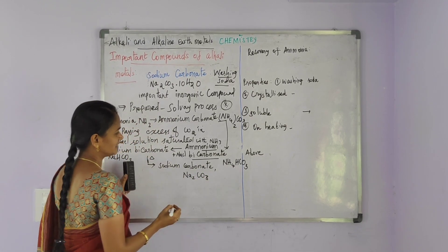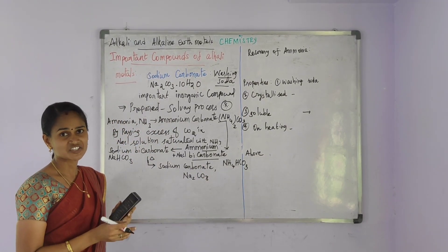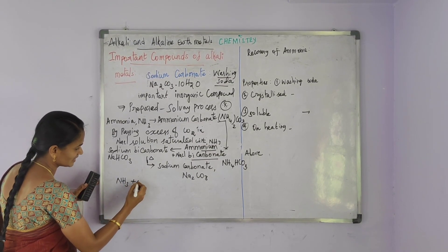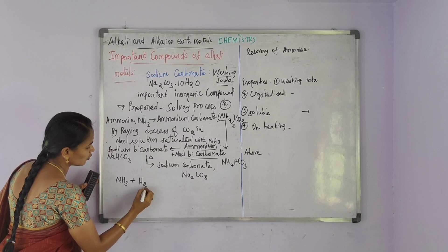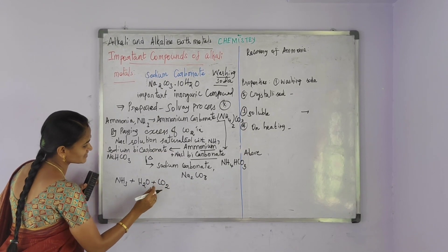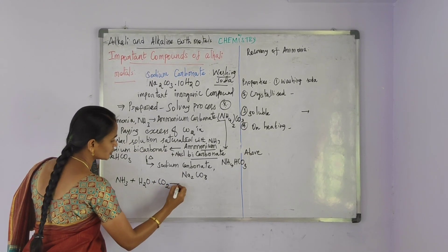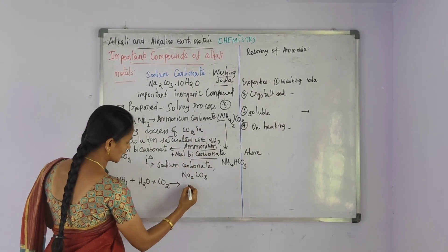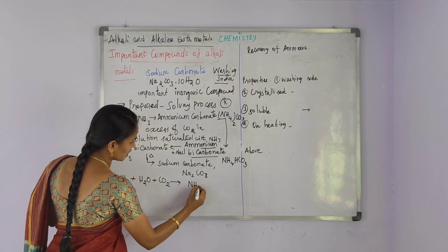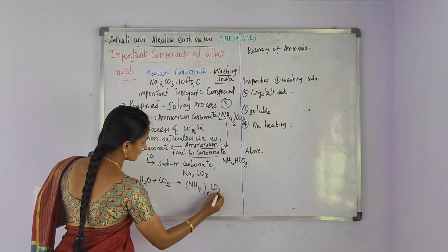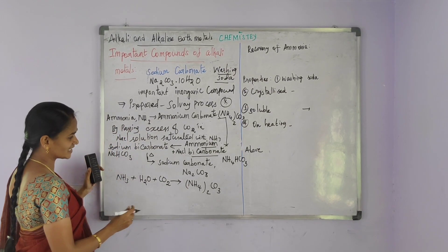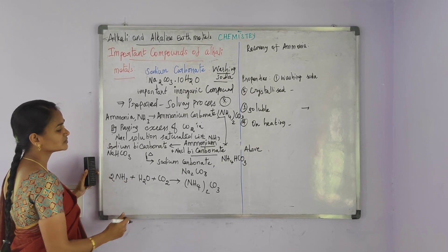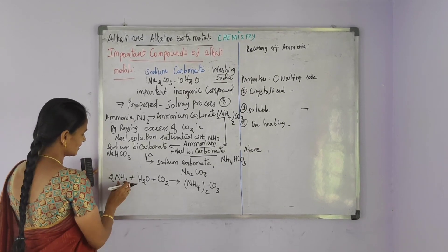Now let us see the equations step by step. Step 1: Ammonia (NH3) is treated with water (H2O) and carbon dioxide (CO2). This gives ammonium carbonate, (NH4)2CO3. Balancing the equation, we place a coefficient of 2. Now the equation is balanced.